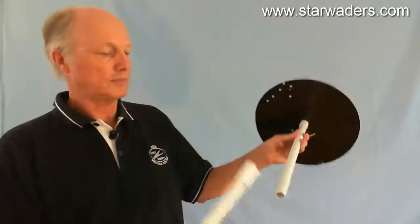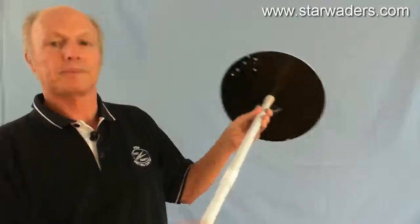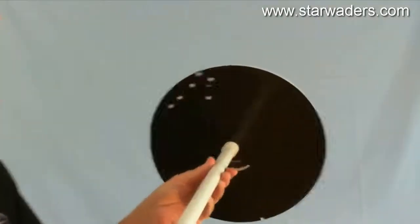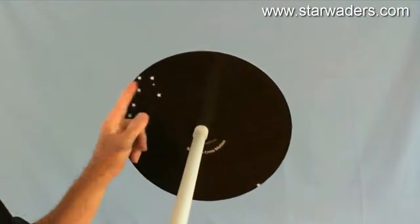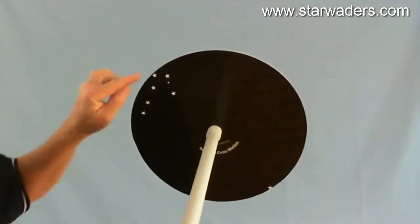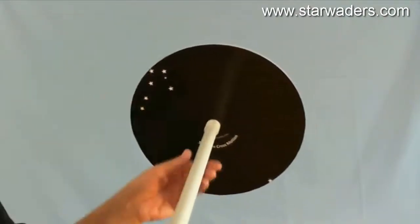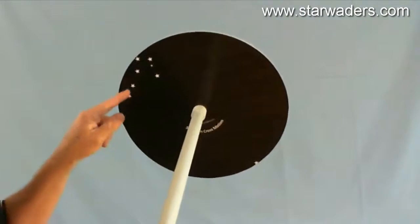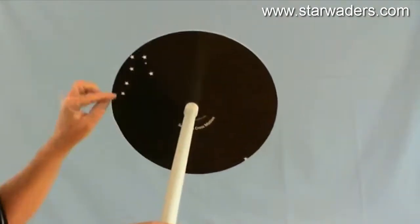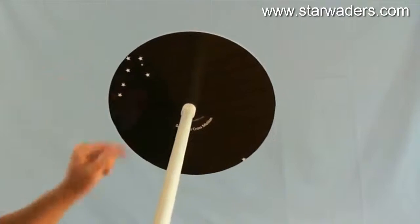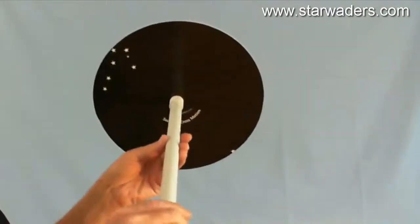We prepare the model by inserting the shaft. Right, so here we have the Southern Cross. There is its long arm, there is its short arm, and there are two pointers to it.